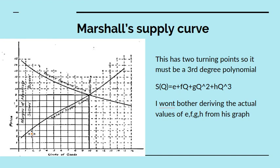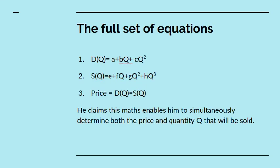Now, if we look at the supply curve, it's even more complicated. We see it curves one way, then it curves the other way. So it must be at least a third degree polynomial. So it must be an equation of this form. Up arrow means squared and cubed, sorry, I should have formulated it properly. I'm not going to derive the actual values for the constants e, f, g and h from his graph. That's just tedious to go through the steps.